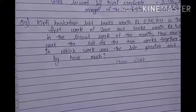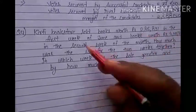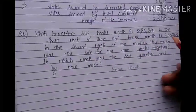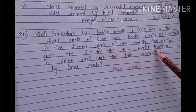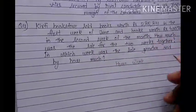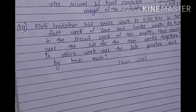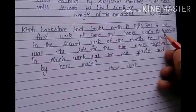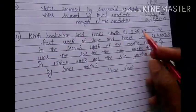Now coming to question number 4. Kirti bookstore sold books worth rupees 2,85,891 in the first week of June and books worth rupees 4,768 in the second week of the month. How much was the sale for the two weeks together? In which week was the sale greater and by how much? For the total sale we will add.